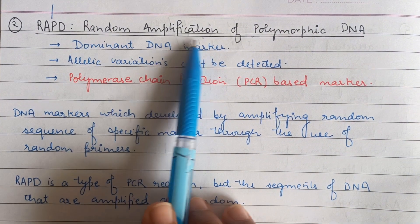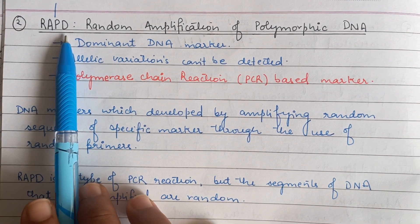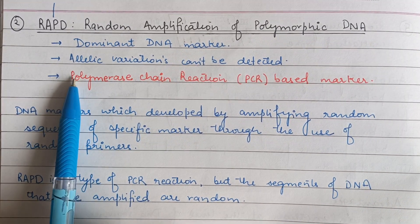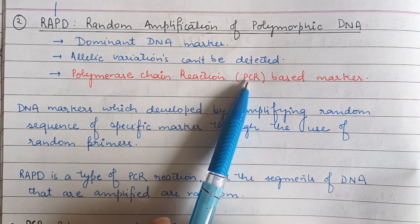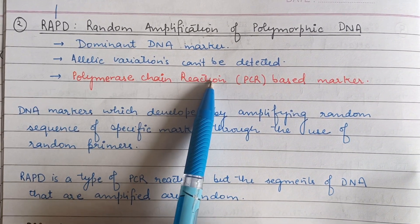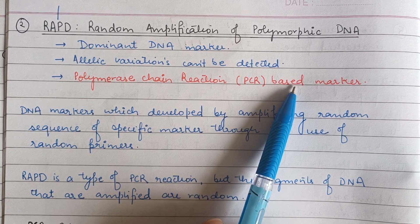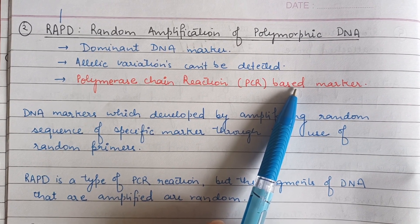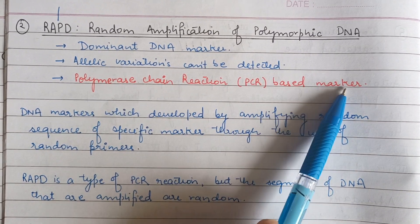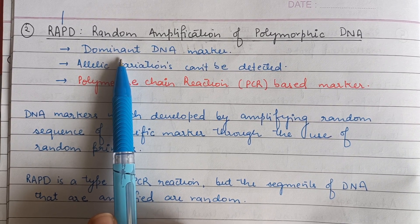In random amplification of polymorphic DNA, which is a dominant marker, we collect the sample. We have just a few samples of specific DNA which we have randomly chosen, and we need to multiply these samples and then subject them to electrophoresis. For multiplication we use polymerase chain reaction, which is PCR. So RAPD is a PCR-based marker, unlike RFLP which is a hybridization-based technique. RFLP is a codominant marker, while RAPD is a dominant marker.